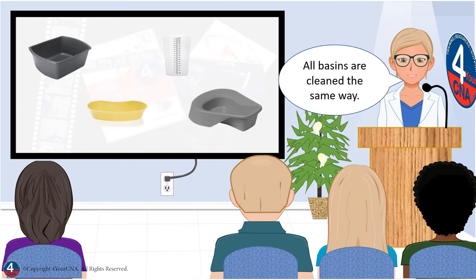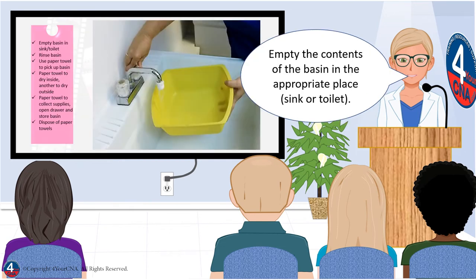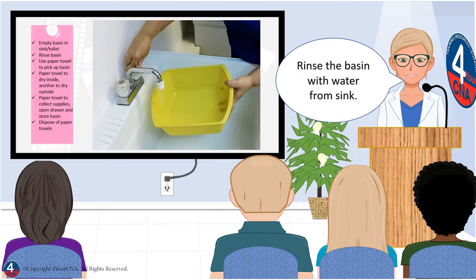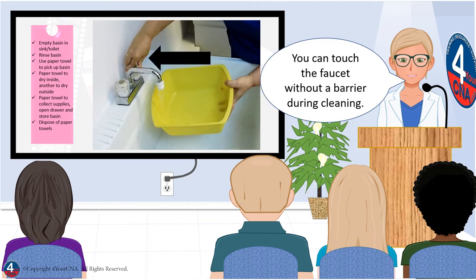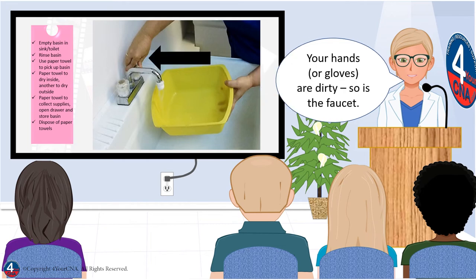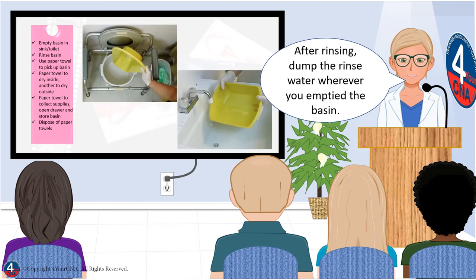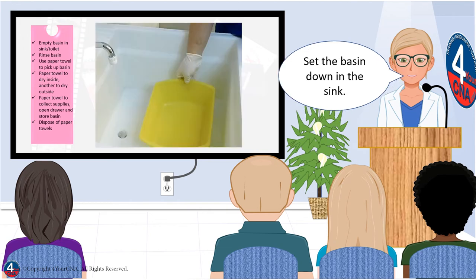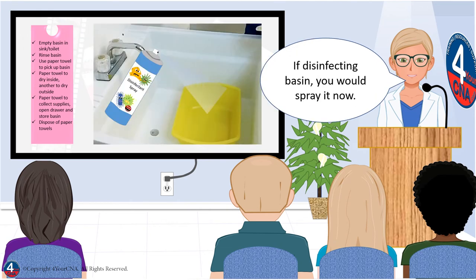All basins are cleaned the same way. Empty the contents of the basin in the appropriate place — sink or toilet — and rinse the basin with water from the sink. You can touch the faucet without a barrier during cleaning because your hands or gloves are dirty, and so is the faucet. After rinsing, dump the rinse water wherever you emptied the basin, and then set the basin down in the sink. If disinfecting the basin, you would spray it now.